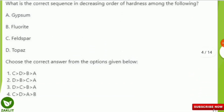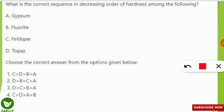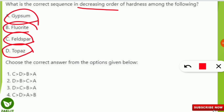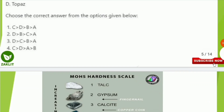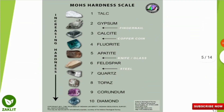So what will be the correct option? Since the question asks for decreasing order, the highest hardness comes first: topaz, followed by feldspar, fluorite, and gypsum — that means the sequence DCBA is the correct decreasing order, making option number 3 correct. Mohs scale is very important, so kindly make this table and remember it.